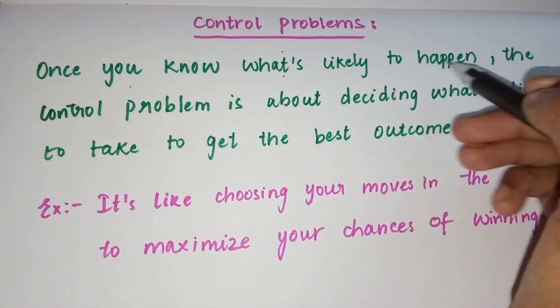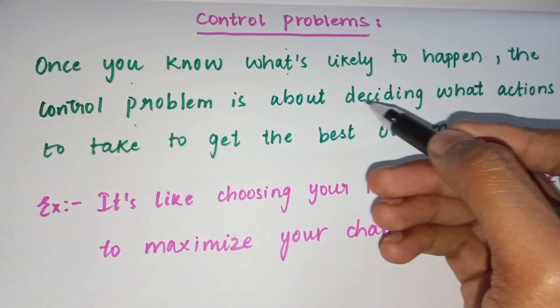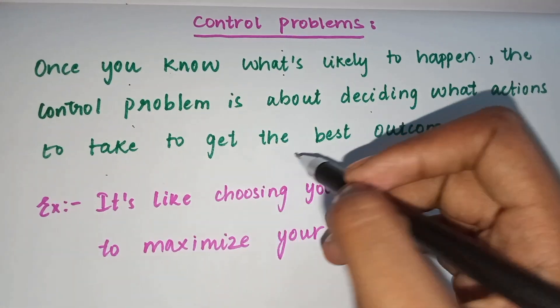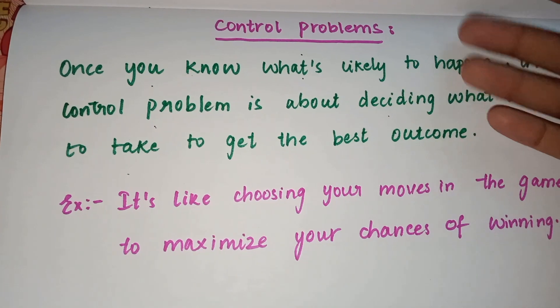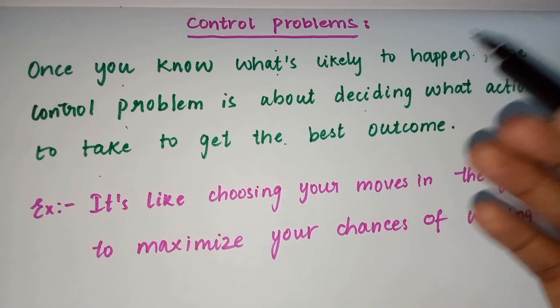The control problem is about deciding what actions to take to get the best outcome. Here you're just predicting; in control, you're taking an action on it to get the best outcome.